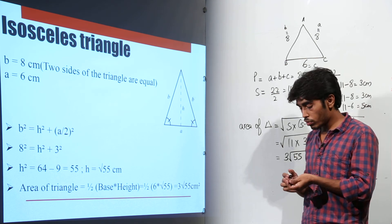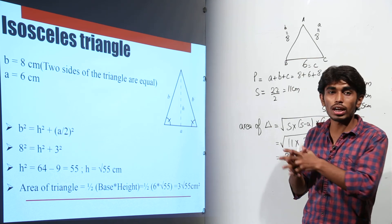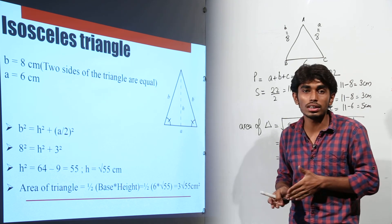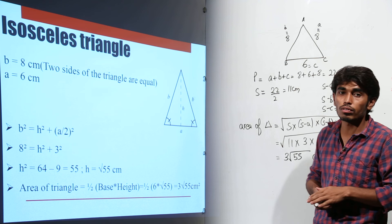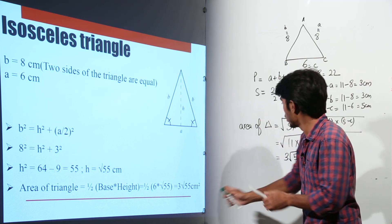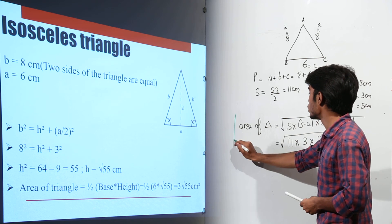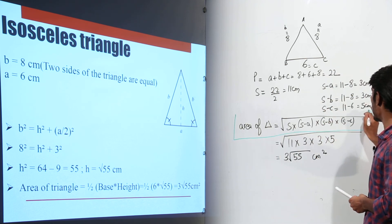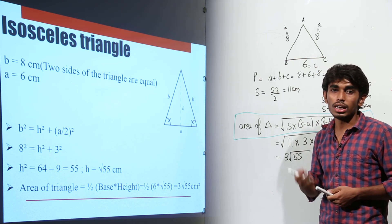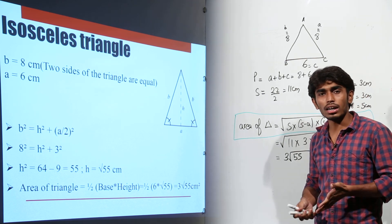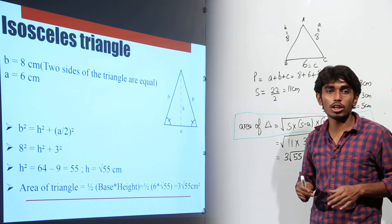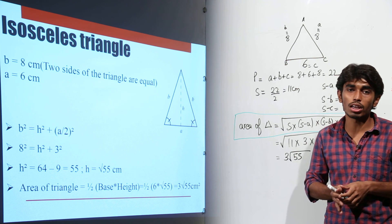We have verified the area of an isosceles triangle and a scalene triangle using Heron's formula. We can similarly calculate the area of an equilateral triangle. This is a general formula which can help us find the area of any triangle — whether scalene, equilateral, right angle or isosceles — as long as all three sides are given.